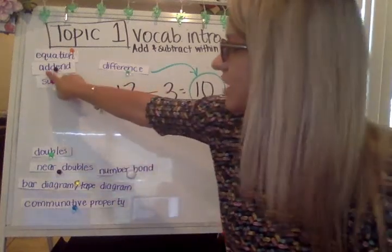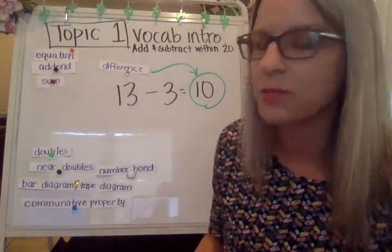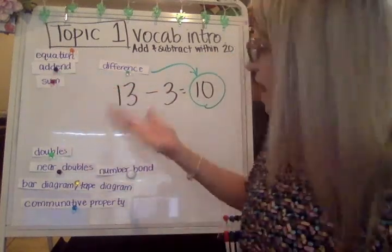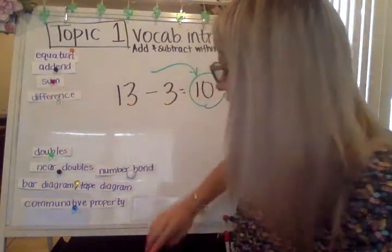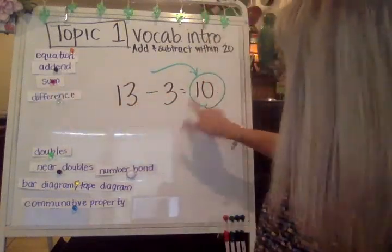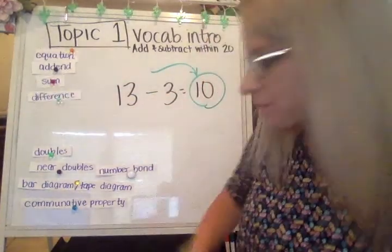Notice that hidden word 'add' inside 'addend' — that'll help you remember that addends are for addition. So this equation has a difference of 10.